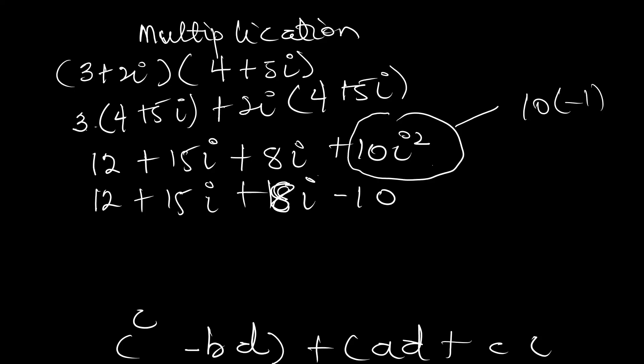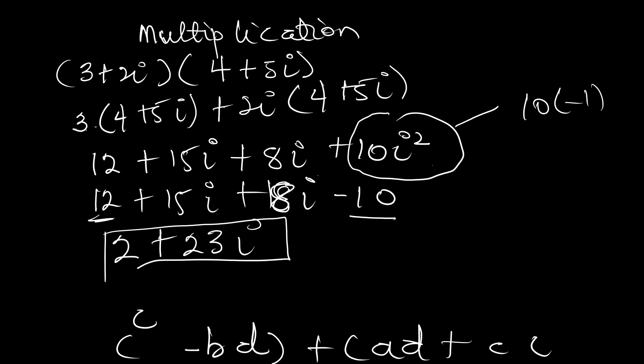Now let's do the basic arithmetic. We have 12 and minus 10, so 12 minus 10 gives us 2. Then we have 15i and 8i, and 15 plus 8 gives us 23, so plus 23i. The final answer when you multiply three plus two i and four plus five i is 2 plus 23i. Thank you for watching this video — stay tuned for the next episode of complex numbers. Have a good day.